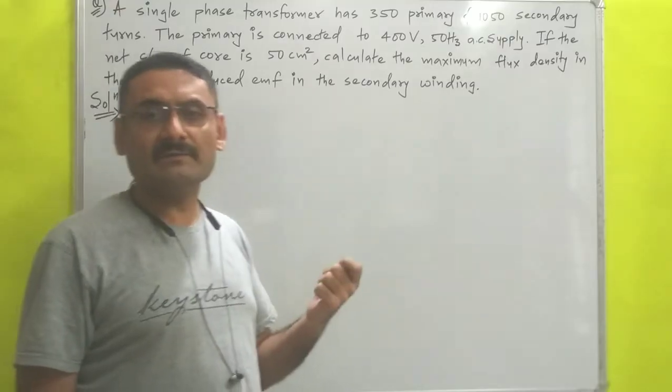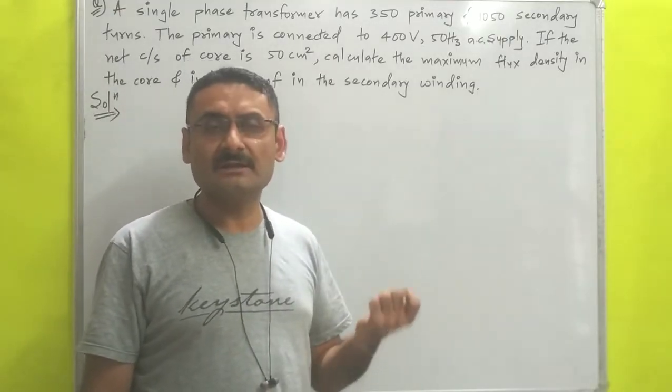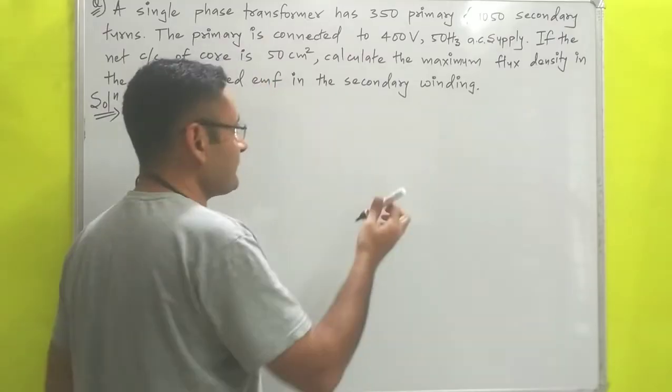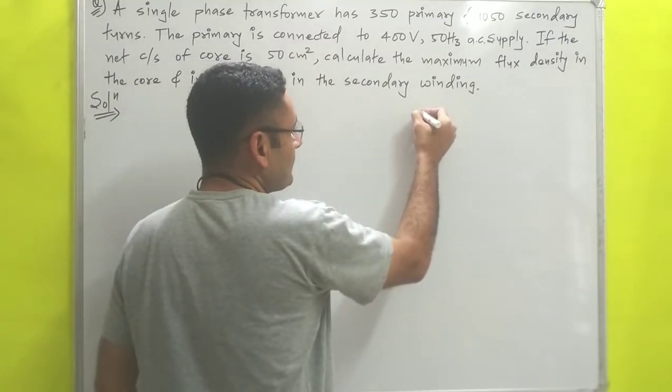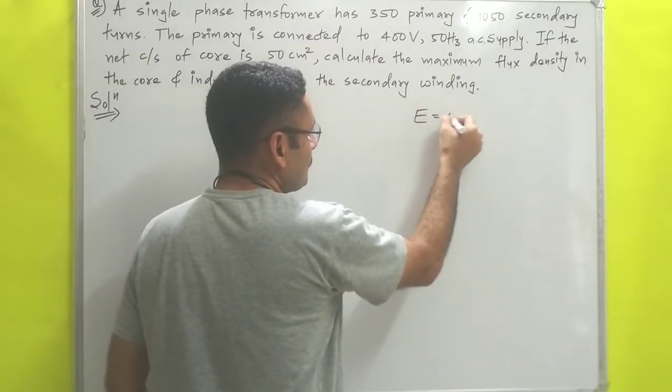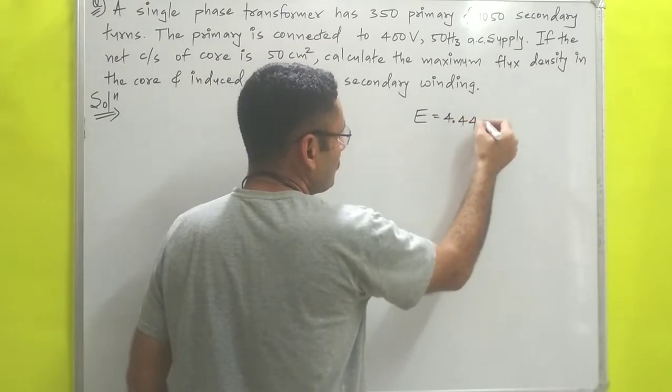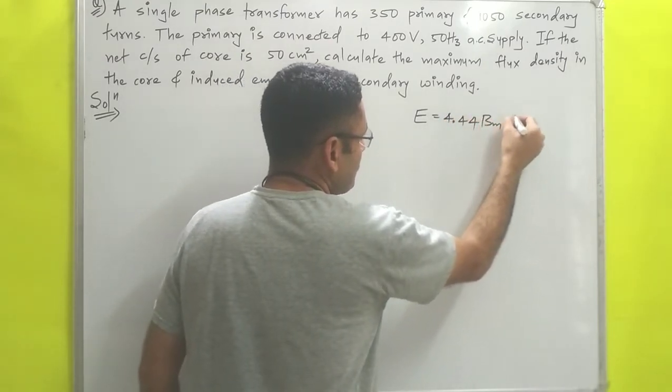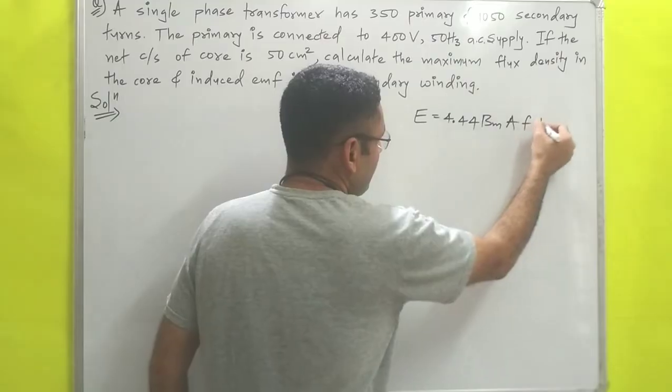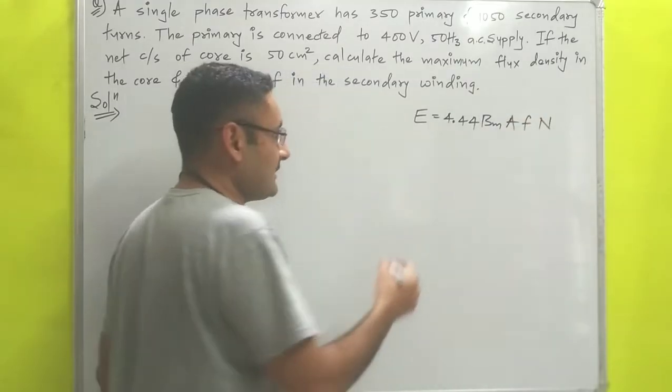Before starting this numerical, first of all we will recall one equation that we have derived in our previous video lecture. The EMF of single phase transformer was E = 4.44 × Bm × A × f × N.